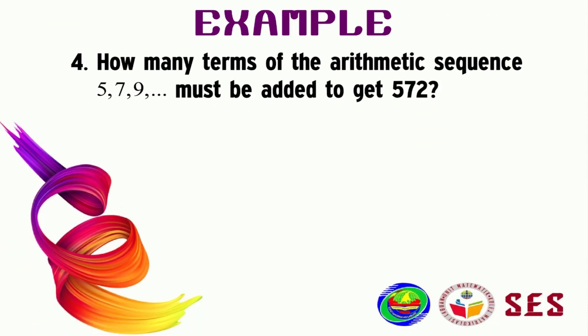So we've got this example now. How many terms of the arithmetic sequence 5, 7, 9, must be added to get 572?